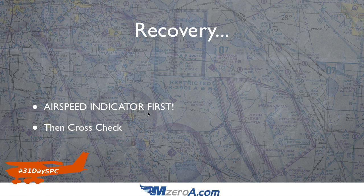The one instrument that's going to tell you something true is the airspeed indicator. There are two possible scenarios when you're spatially disoriented: you can be super slow and risking a stall, which means you need to apply power and ease the nose down; or you could be so fast that you're risking the structural integrity of the airplane, which means you need to bring the power back to idle and smoothly bring the nose back to level. Look at your airspeed indicator — it tells you those two scenarios. Then cross-check, then check your attitude indicator, then work through the rest of the instrumentation. There are only two scenarios: you're either going to stall it or break something off the airplane. Airspeed indicator first on that recovery.